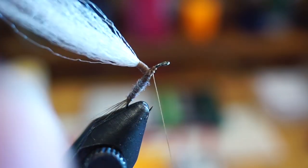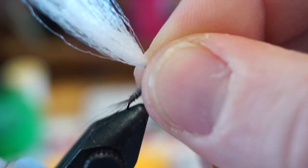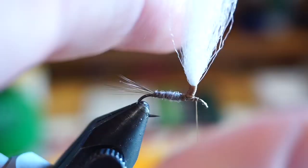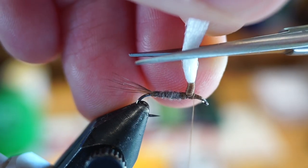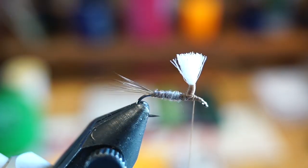Now my hook slipped in the vise, which is unfortunate, but luckily it didn't mess up my post. At this point, I like cutting my post off to give me more room on the next steps. This should be roughly as long as the shank of the hook.